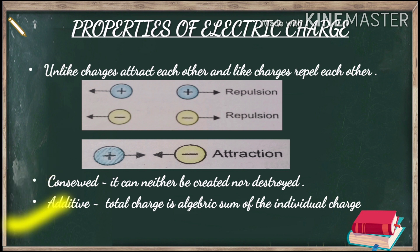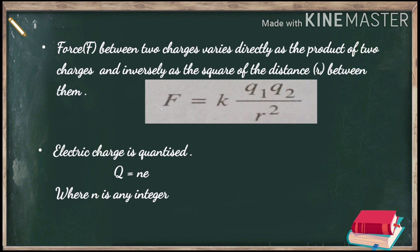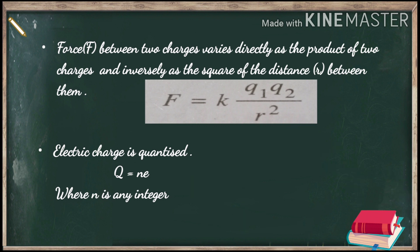The third property is that charges are additive in nature, meaning we can add charges. If we have five charges Q1, Q2, Q3, Q4, and Q5, we can add them as Q1 + Q2 + Q3 + Q4 + Q5. The next property is about forces: if two charges Q1 and Q2 are separated by a distance r, then the force is F = k·Q1·Q2 / r². This means force is directly proportional to the product of the charges and inversely proportional to the square of the distance between them.